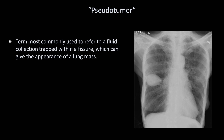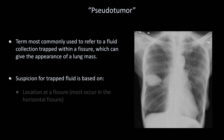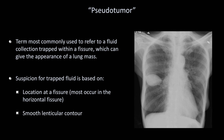The second easy-to-misdiagnose subtype of effusion is sometimes referred to as a pseudotumor. This term is most commonly used to refer to a fluid collection trapped within a fissure, which can give the appearance of a lung mass. The suspicion that a density represents trapped fluid is based on its location at a fissure, most commonly in the horizontal fissure. Also, these collections often have a smooth, lenticular contour.